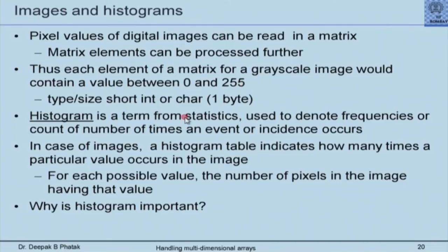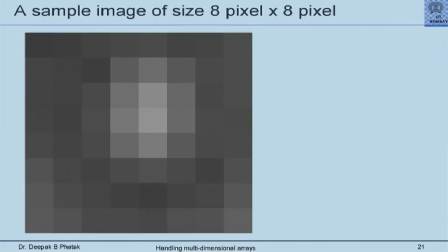One particular technique used in this example is called a histogram. Many students will know this term from statistics — it denotes the frequency or count of how many times an event occurs. In the case of an image, a histogram table indicates how many times a particular pixel value occurs. For each possible value, the number of pixels having that value is the histogram value. As an example, this is a sample grayscale image of 8×8 pixels.